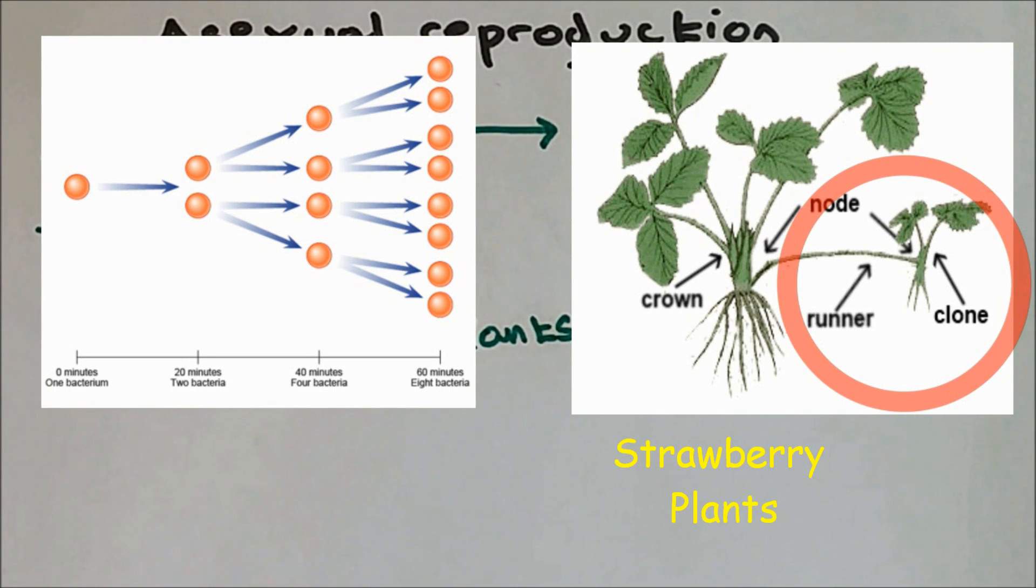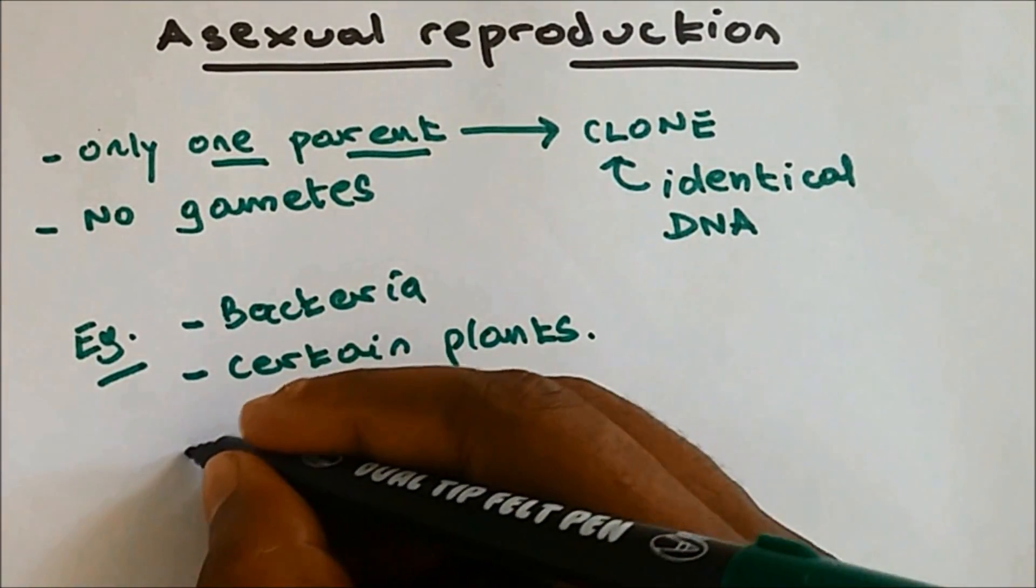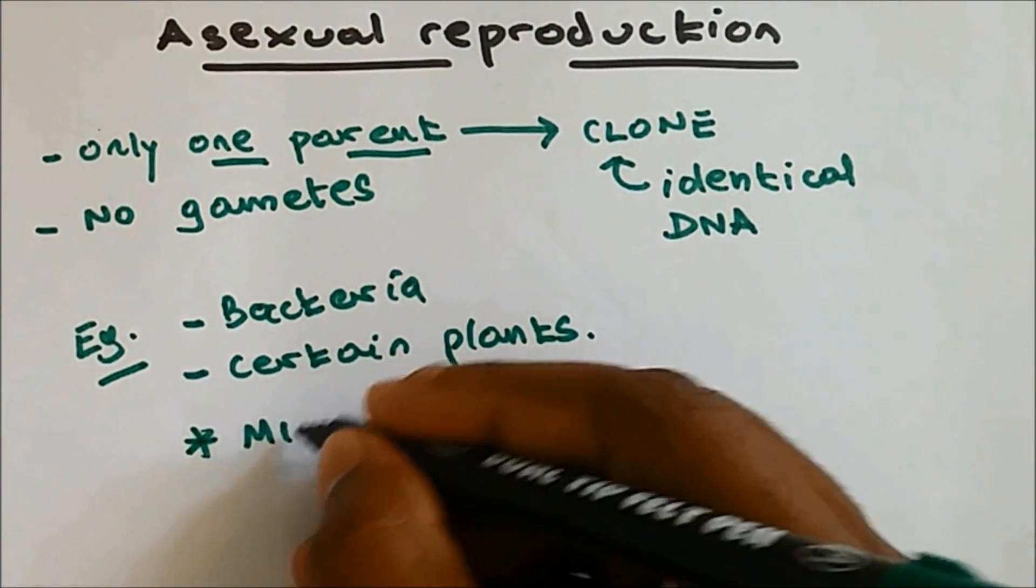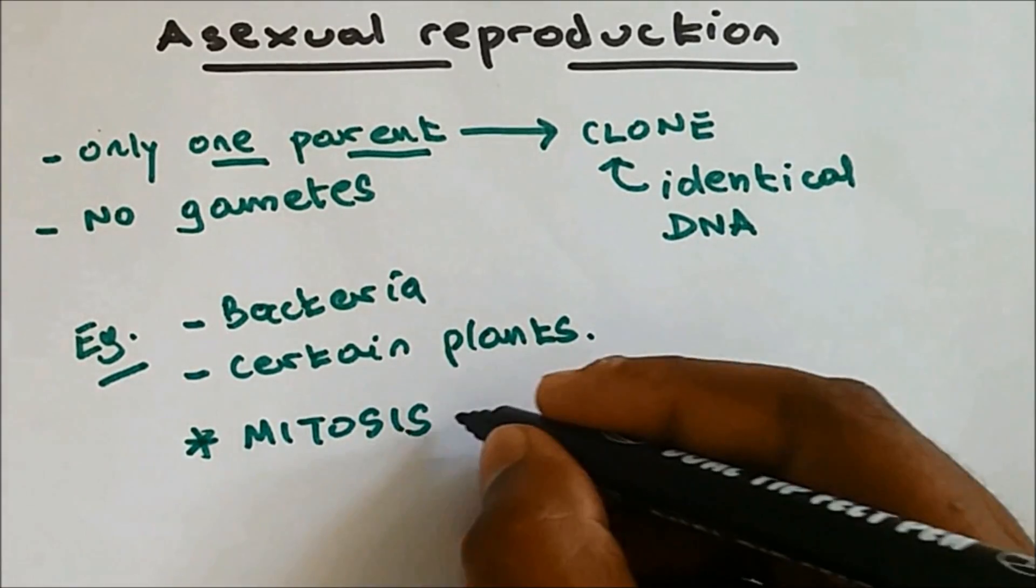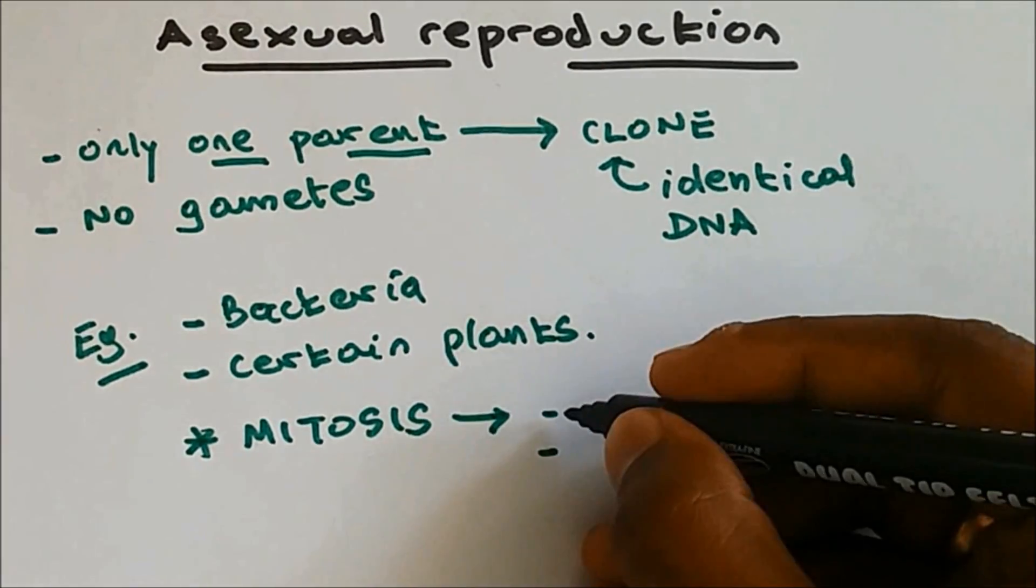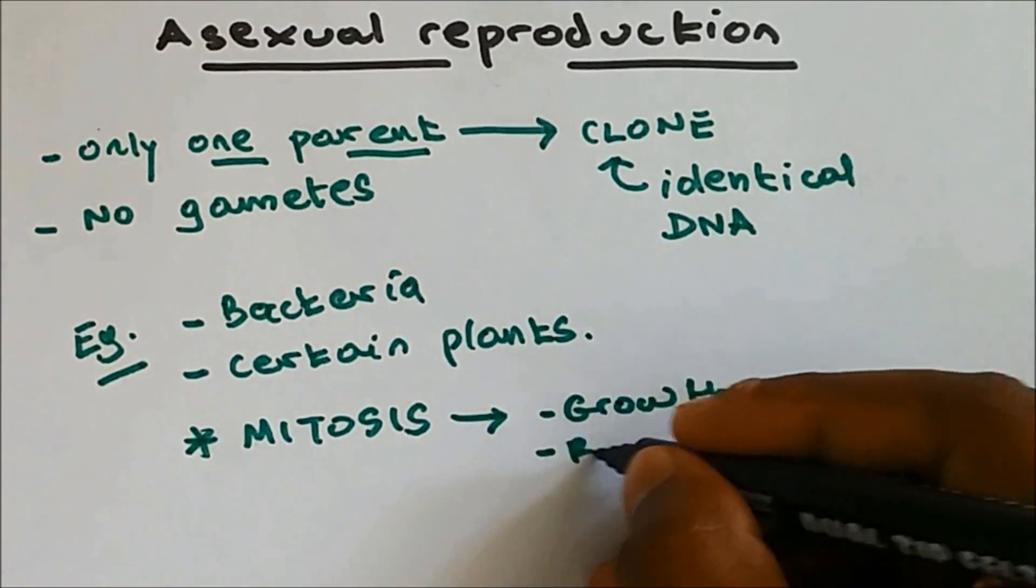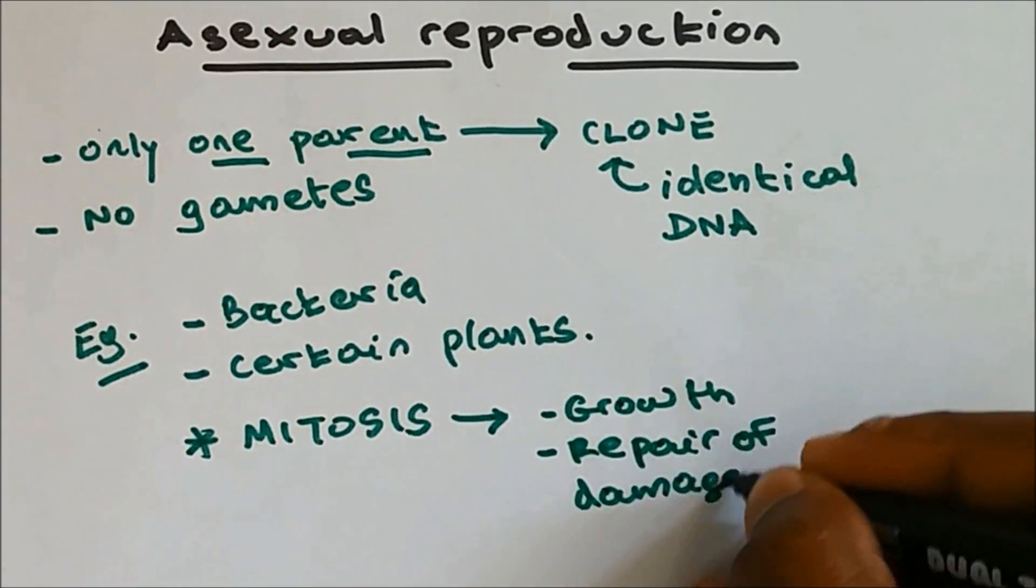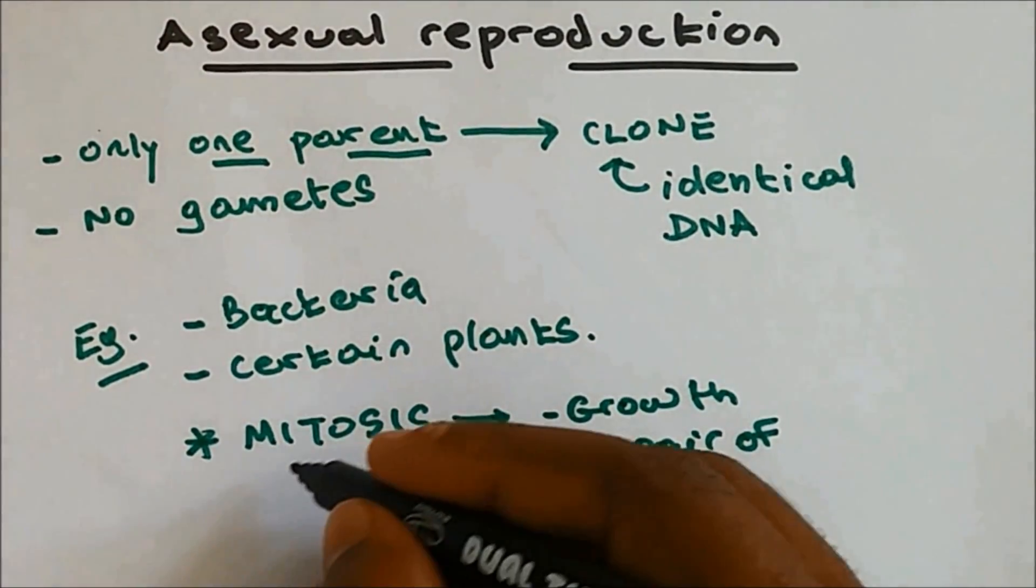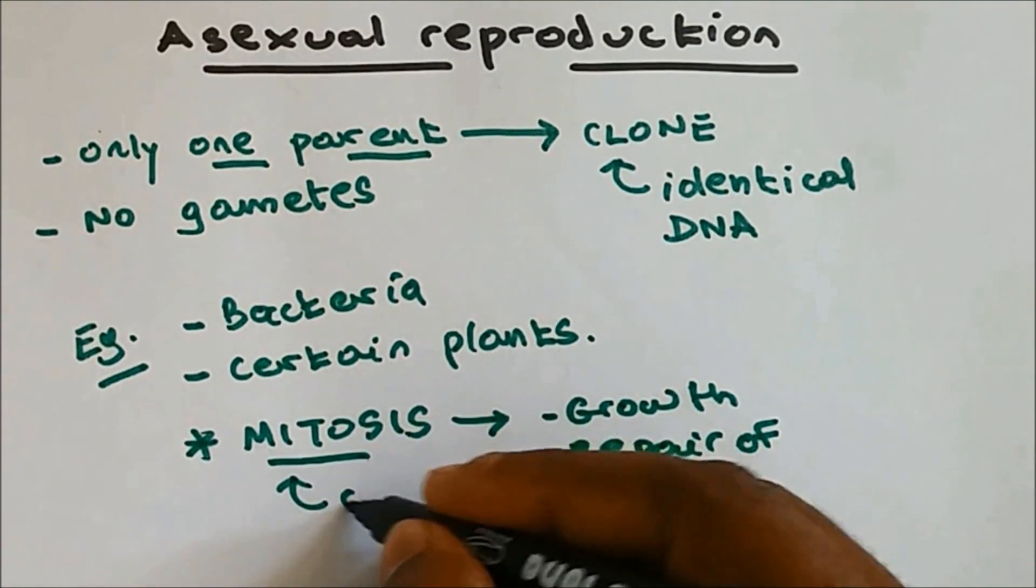Another example of asexual reproduction is mitosis, and mitosis happens in growth and repair of damaged tissue. Mitosis is a type of cell division.